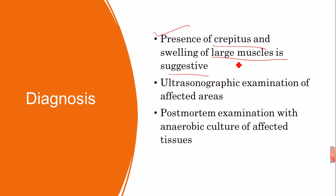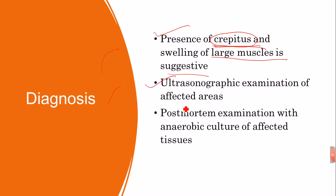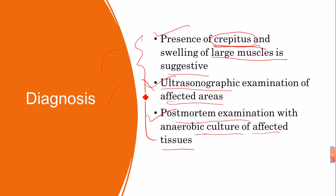For diagnosis: the presence of crepitus and swelling of large muscles is suggestive. If the major muscles of the animal are swollen and you touch the skin and it feels like air is inside, these are diagnostic indicators. Ultrasonography examination of the affected area can also be used. Post-mortem, anaerobic culture of affected tissue can confirm the diagnosis.